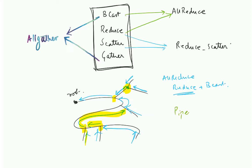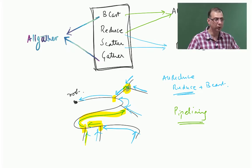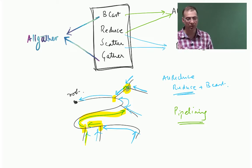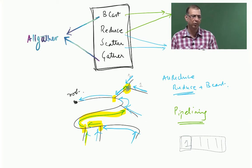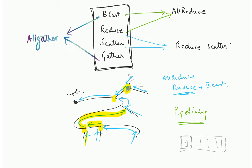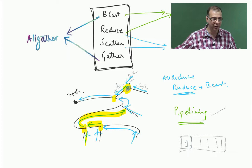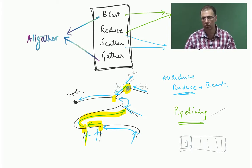One key optimization is pipelining. You divide your data into chunks or packets. You send the first packet up the two links; the processor adds up those two chunks — say 32 elements — and in the next iteration forwards that result while the children already start sending the second packet. This is called pipelining: you interleave the communication so that after a short while all the links are busy and data flows through the entire network continuously.